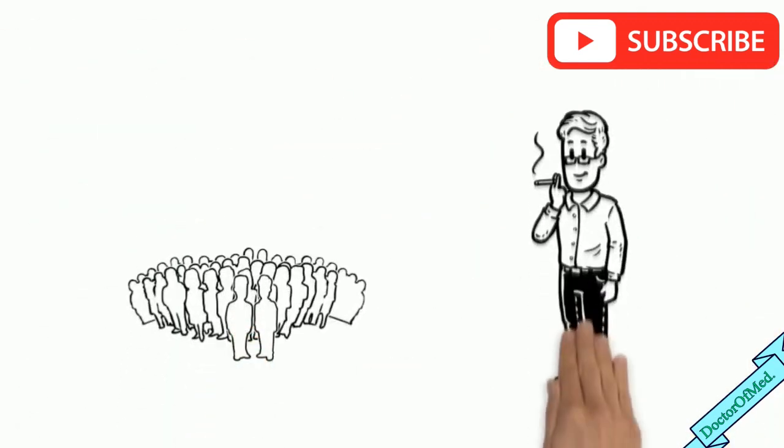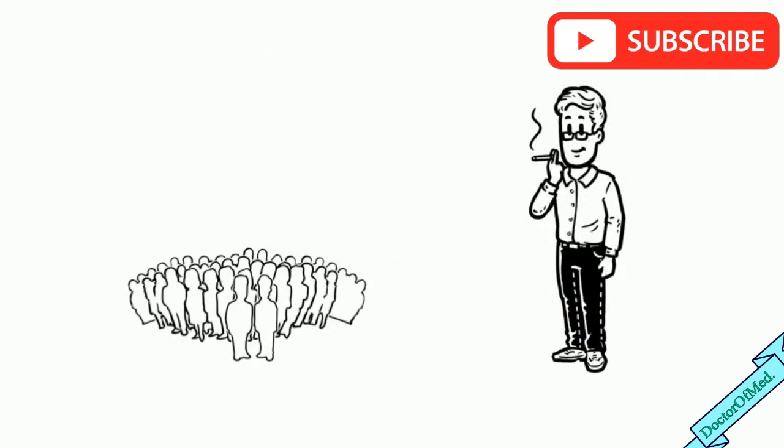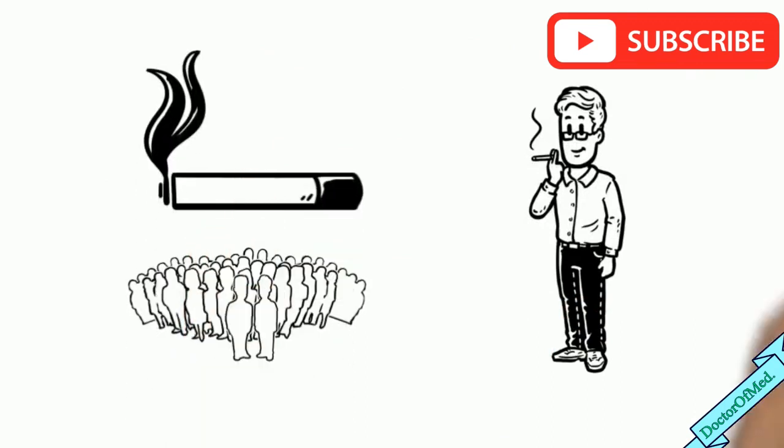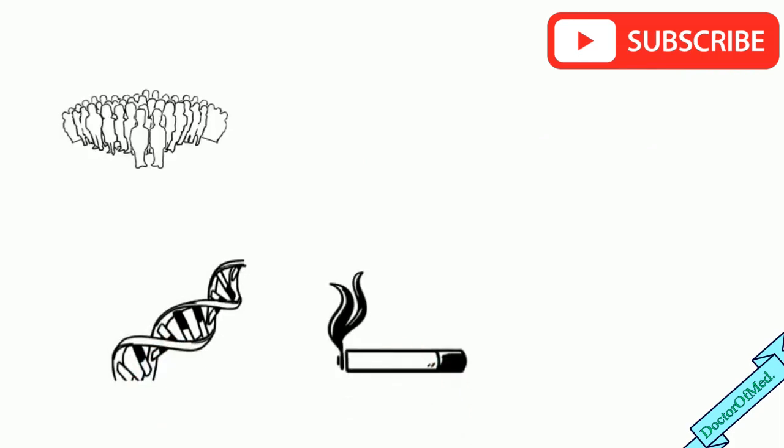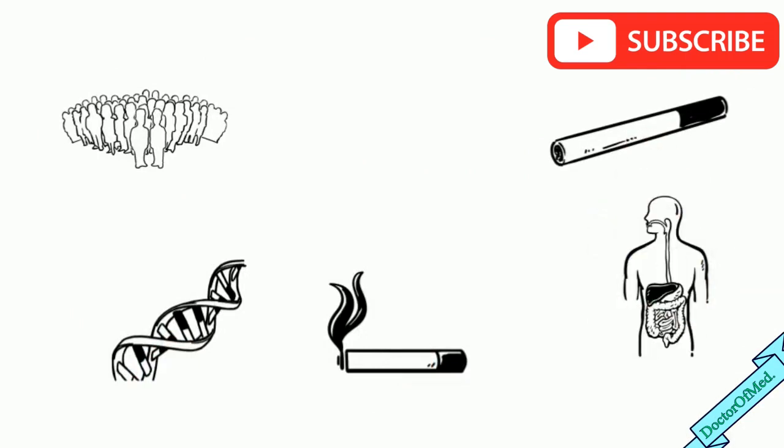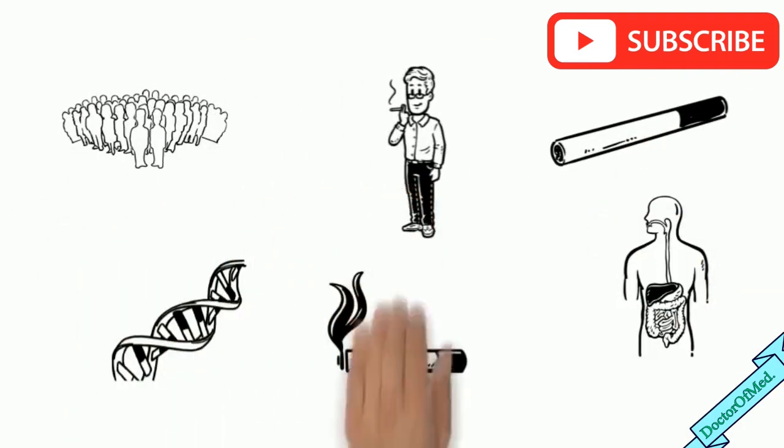Some people are more prone to nicotine dependence when they are once exposed to nicotine. Genetics are also involved in nicotine addiction. People who tend to metabolize nicotine slowly, take few cigarettes a day and it is easier for them to quit smoking.